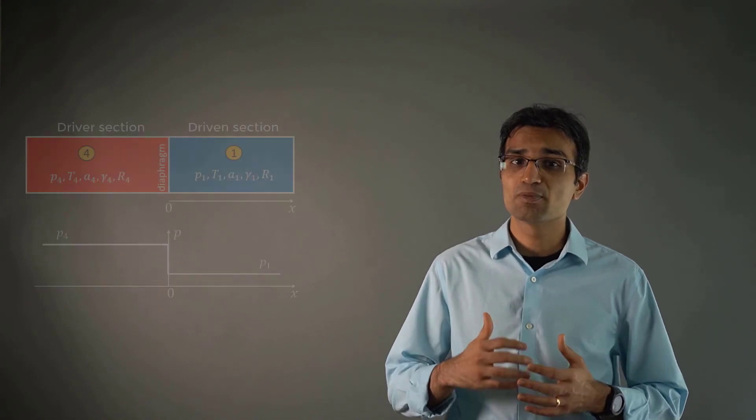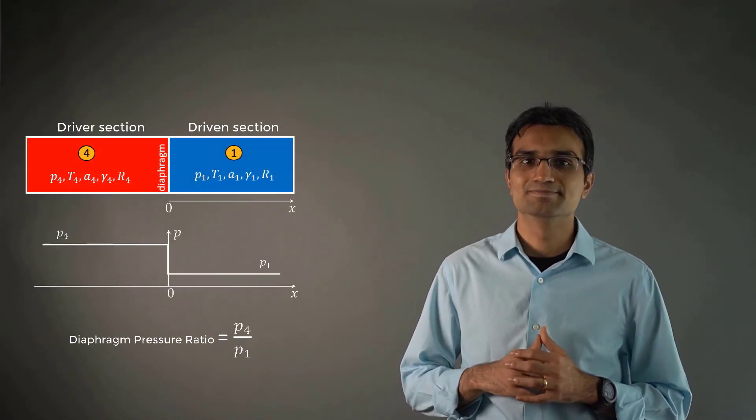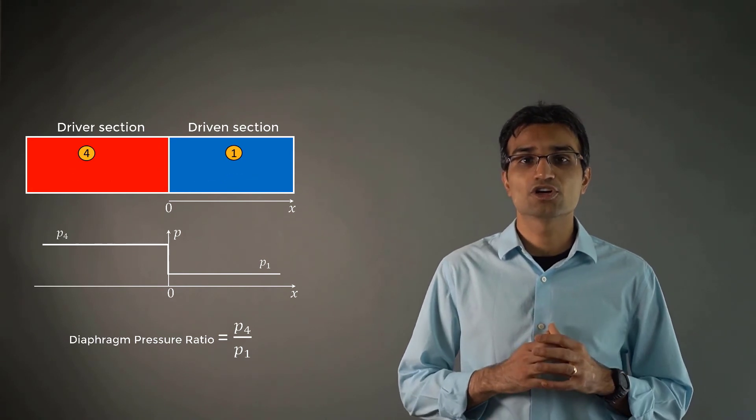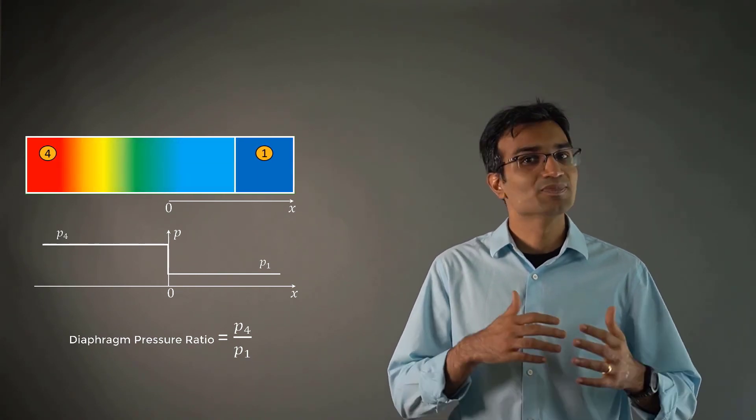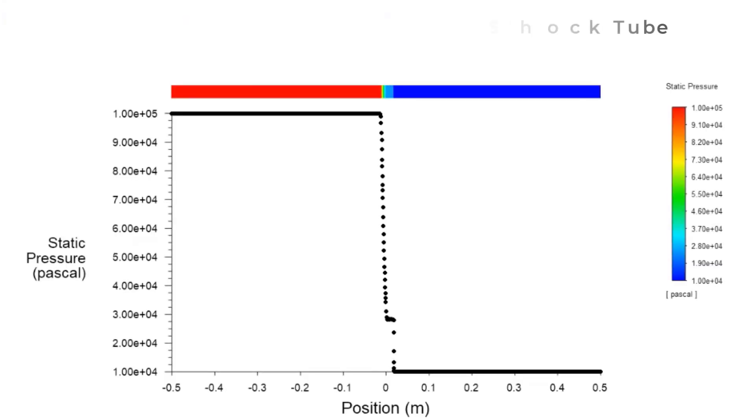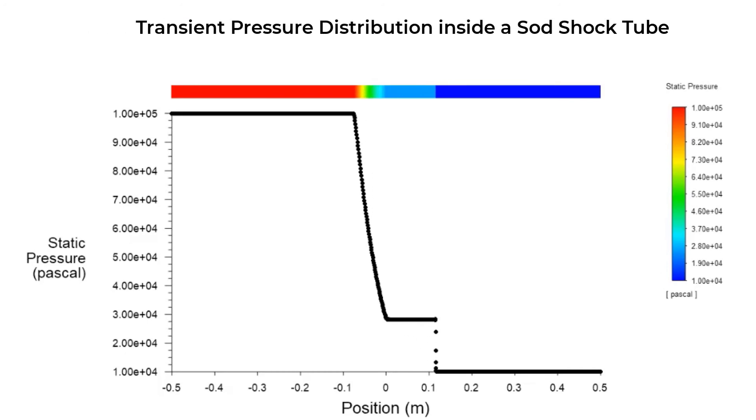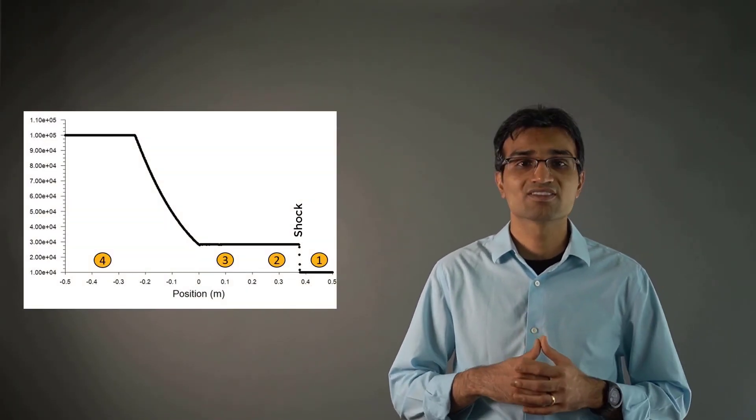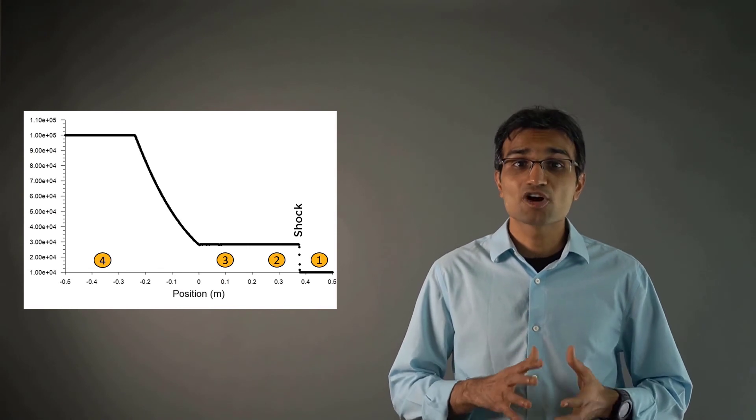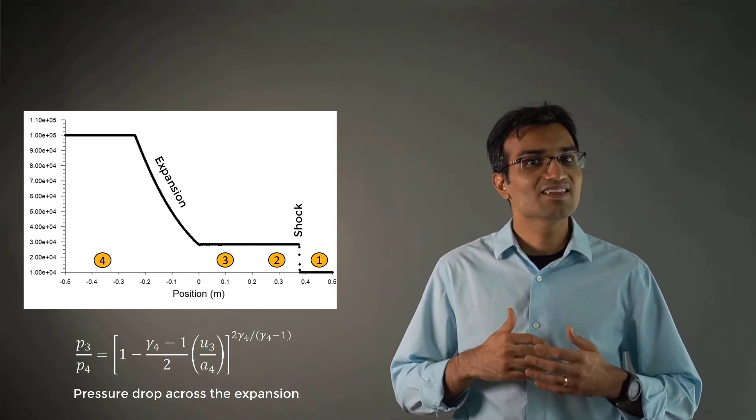Now that we know how to analyze a moving normal shock and a moving expansion wave, we are fully prepared to tackle the SOD shock tube problem. The flow field inside the shock tube after the diaphragm is removed can completely be described by the diaphragm pressure ratio, P4 by P1.